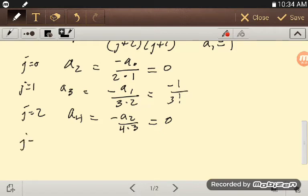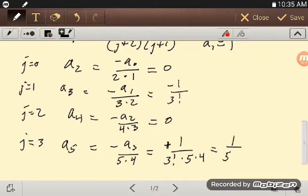j equals 3, that's a sub 5, and that's minus a 3 over 5 times 4. So that's minus a minus, a 3 was minus 1, so that's minus a minus, I get plus 1 over the 3 factorial, that's a 3, and then also times the 5 times the 4, so that's positive 1 over 5 factorial.